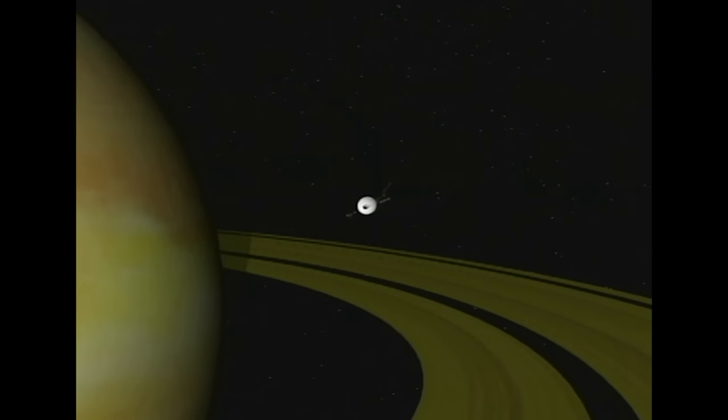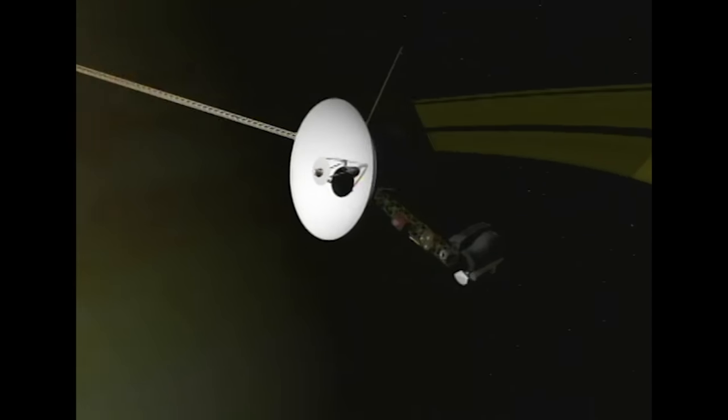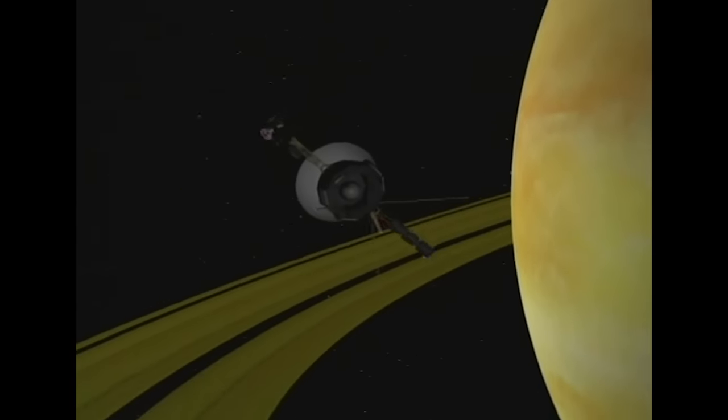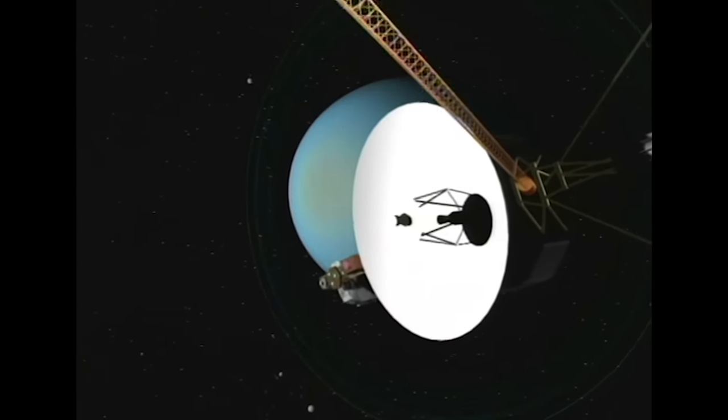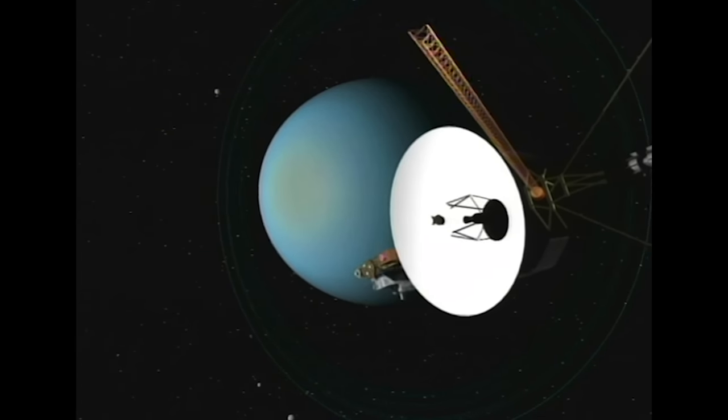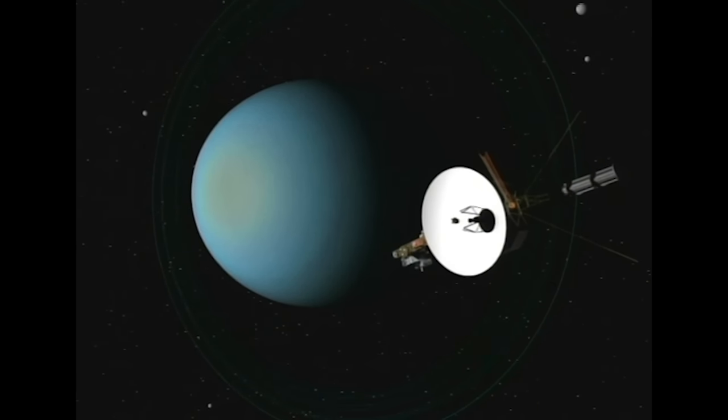Their primary destinations were the four giant outer planets: Jupiter, Saturn, Uranus and Neptune. For 13 years, the Voyagers probed these mysterious worlds at close range, while collecting data and transmitting stunning images back to Earth.